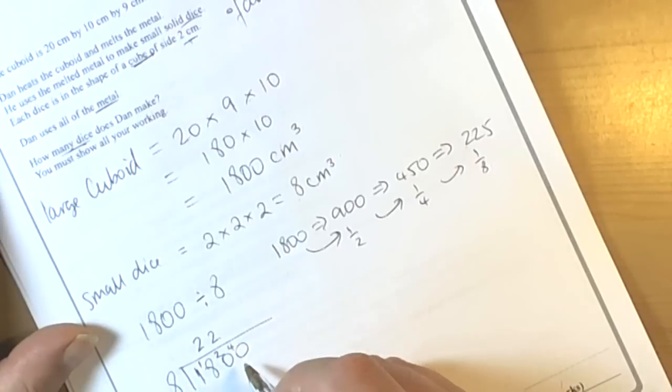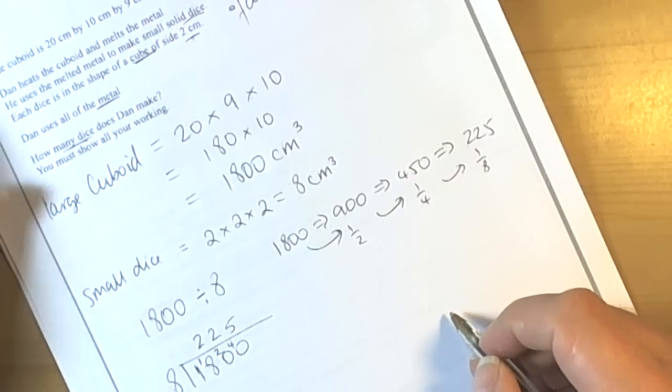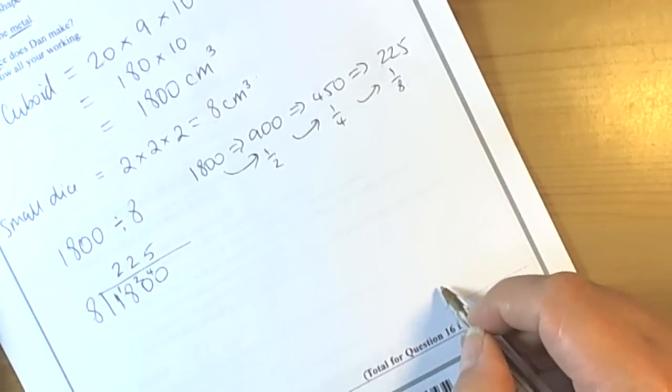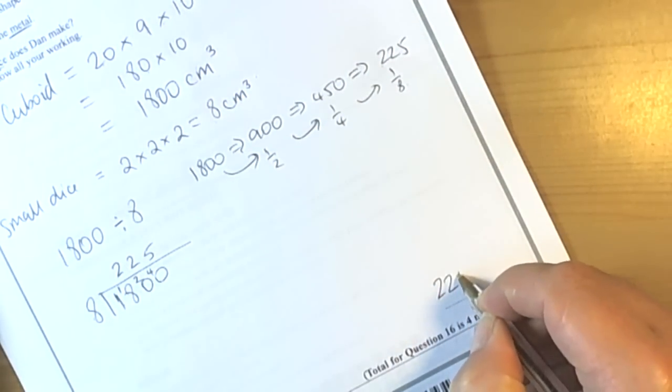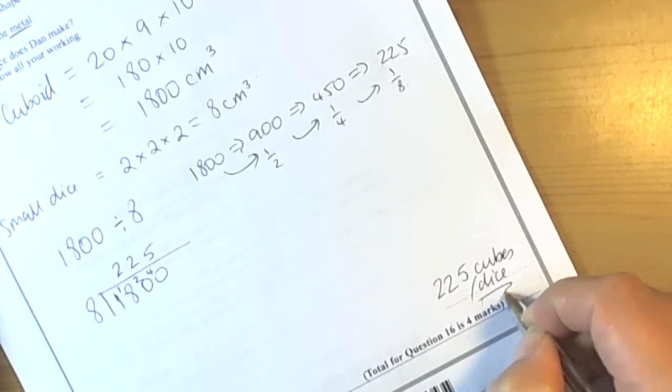That would leave us with a remainder from 20 of 4. 8 into 40 is 5. So either way, we're going to conclude that the final answer will be 225 cubes or dice, because it's about dice.